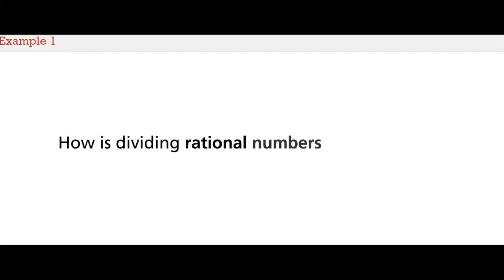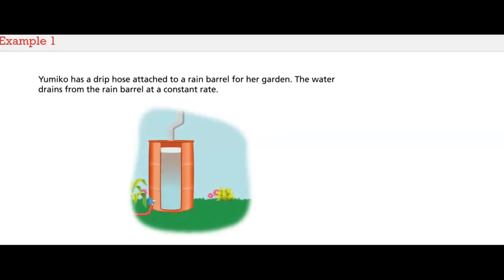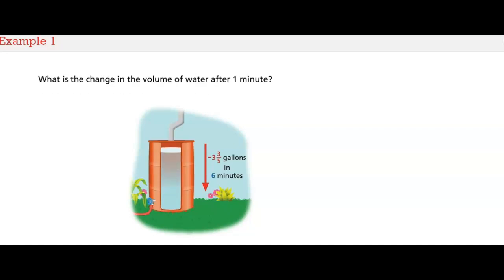How is dividing rational numbers like dividing integers? Think about this question during the lesson. Umeko uses a rain barrel to collect rainwater for her garden. The rain barrel has a drip hose attached. The water drains from the rain barrel at a constant rate. Three and three-fifths gallons drain from the barrel in six minutes. What is the change in the volume of water after one minute?